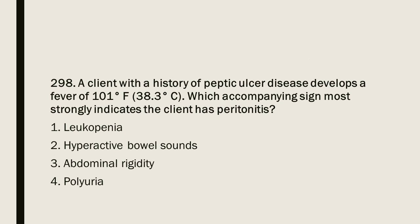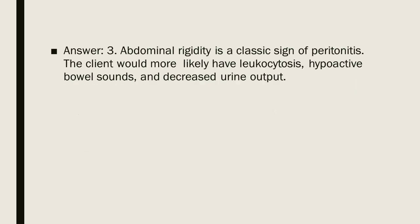Question 298: A client with a history of peptic ulcer disease develops a fever of 101°F (38.3°C). Which accompanying sign most strongly indicates the client has peritonitis? 1. Leukopenia. 2. Hyperactive bowel sounds. 3. Abdominal rigidity. 4. Polyuria. Answer: 3. Abdominal rigidity is a classic sign of peritonitis. The client would more likely have leukocytosis, hypoactive bowel sounds, and decreased urine output.